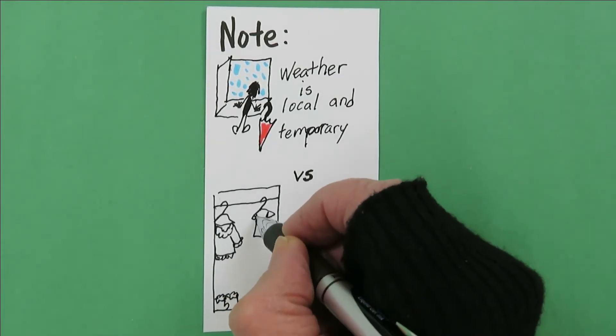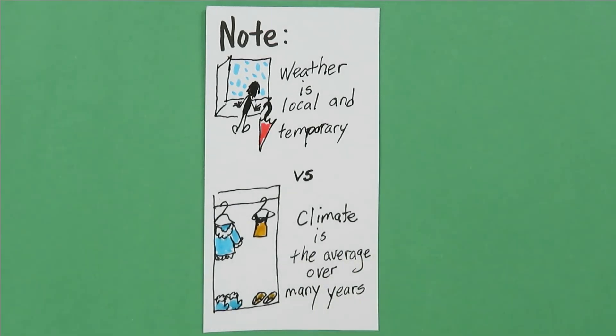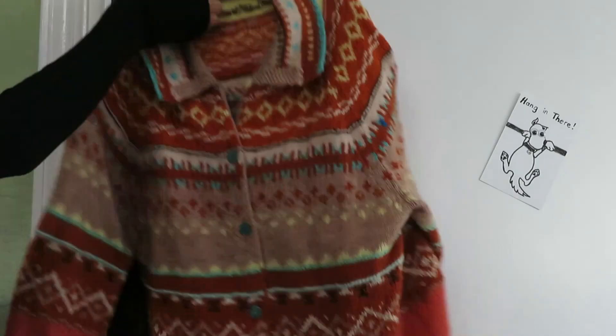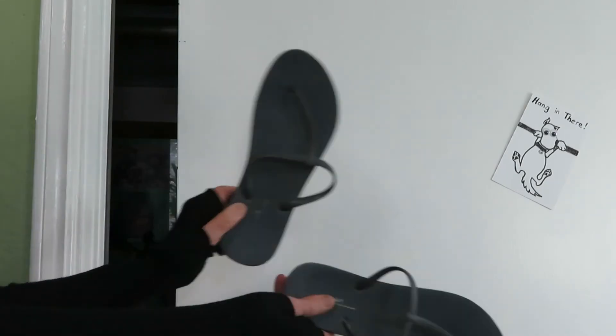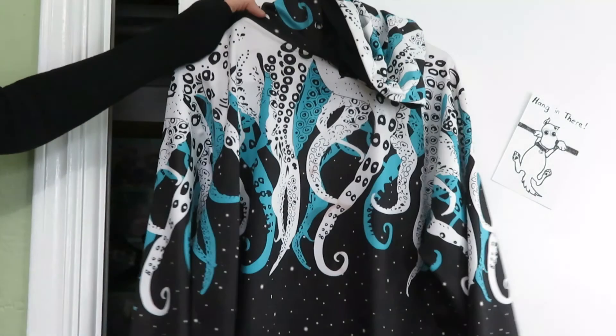It tells you what kind of clothes you need to have in your closet. How cold are your winters? How hot are your summers? Climate might be saying you need a hoodie. But it won't tell you which one to buy.